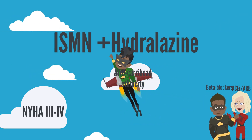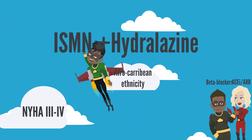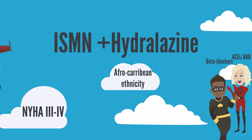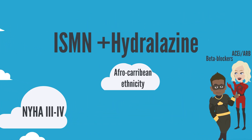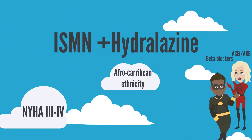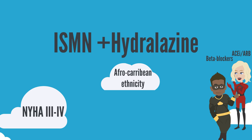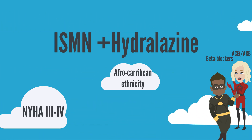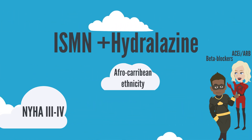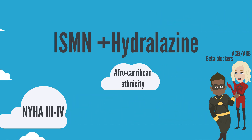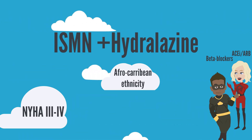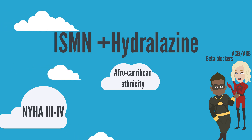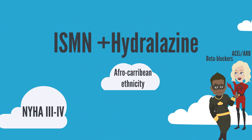In patients who cannot tolerate ACE inhibitors due to side effects such as cough, and beta blockers in combination, ISMN and hydralazine used in combination is a suitable alternative that has been shown to be as effective in patients with heart failure. This benefit is especially so in patients with NYHA class 3 or 4 symptoms and patients of Afro-Caribbean ethnicity.